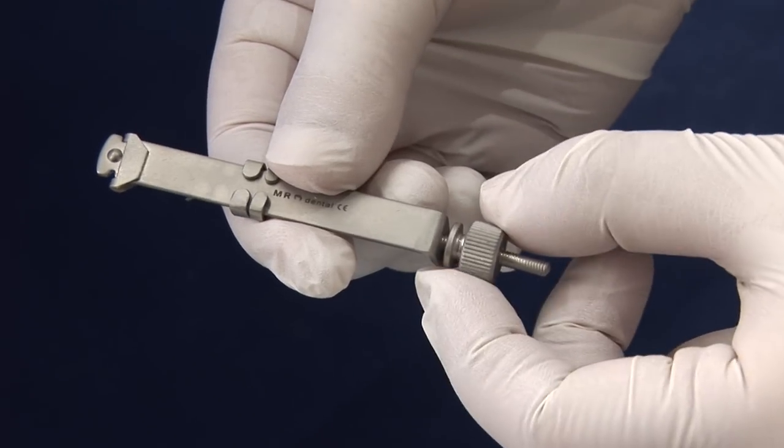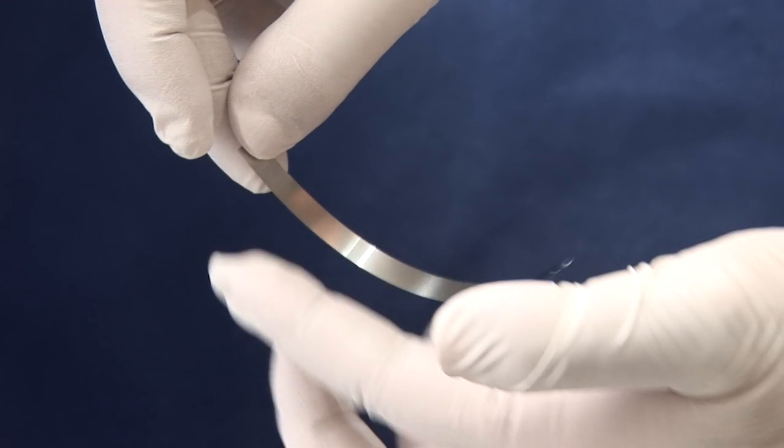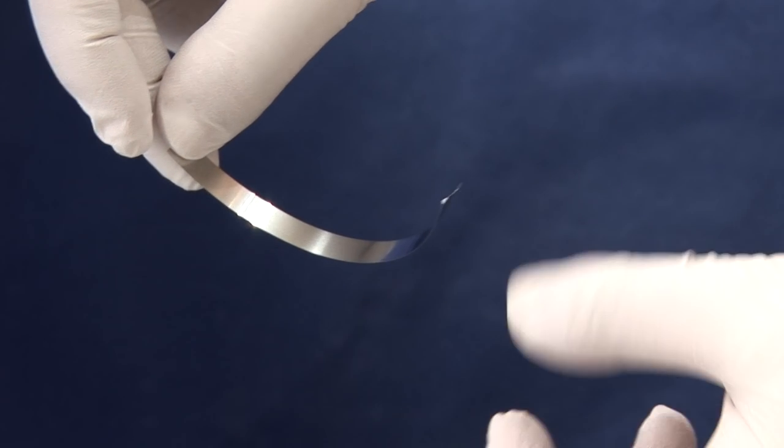This is the nut that makes a matrix band wider or smaller. The length of the matrix band should be the same length as the matrix retainer.